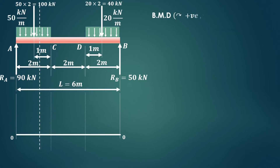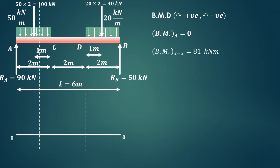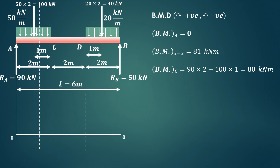Now we find bending moments at all key sections. Bending moment at A is zero since there are no forces to the left. At section XX (x equals 1.8 m) it is 81 kNm as calculated. At point C, considering all forces to the left: RA gives 90 times 2 equals 180, and the 100 kilonewton point load produces an anticlockwise moment of minus 100 times 1. So bending moment at C equals 180 minus 100 equals 80 kNm.